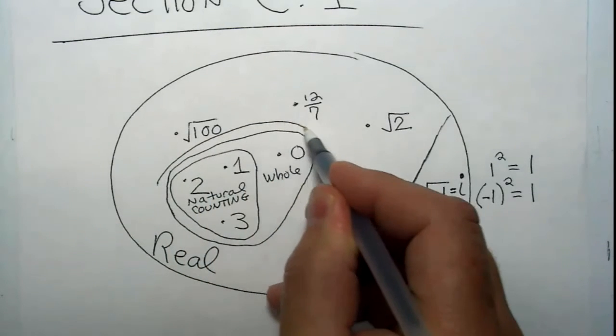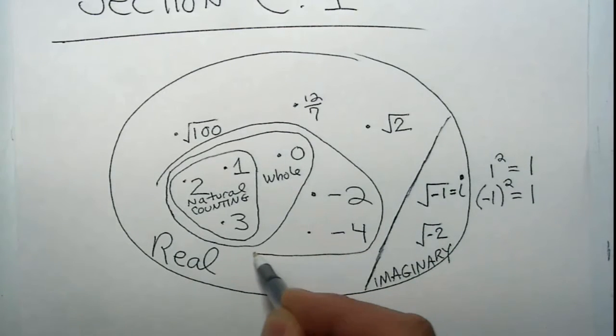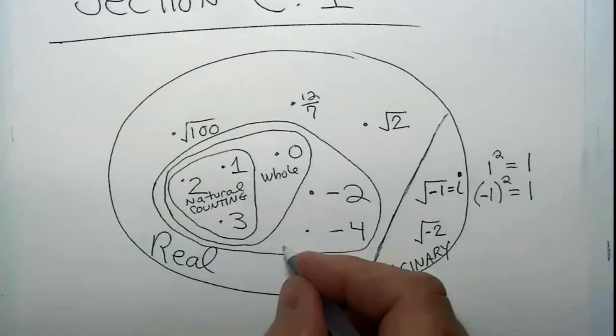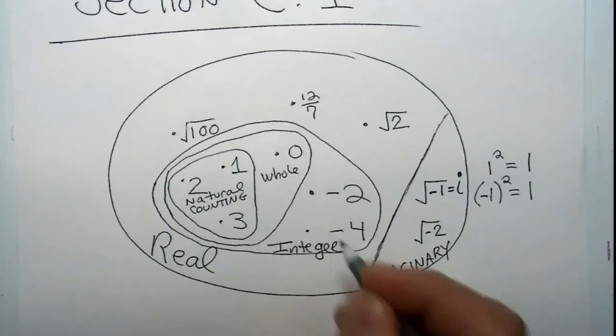We can place one more circle here — this would be the set of integers. Integers include both positive and negative numbers. Integers aren't really fractions; they're numbers that don't have any decimal component either — pretty clean numbers. You can have positive integers, negative integers, and 0 also represents an integer.